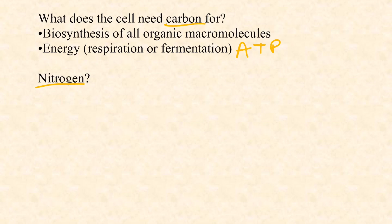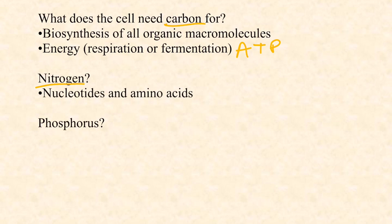Carbon is needed in the largest quantities of anything. The second macronutrient is nitrogen. A bacterium needs a lot of nitrogen for two key macromolecules: nucleotides, which polymerize to form DNA and RNA, and amino acids, which polymerize to form proteins. Nucleotides have a nitrogenous base — nitrogenous means nitrogen-rich — so even just duplicating a chromosome of three to five million base pairs requires a lot of nitrogen.